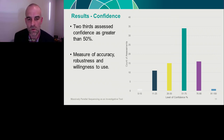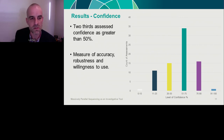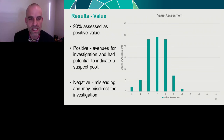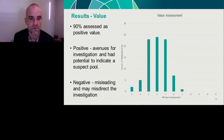For confidence results, two-thirds of the detectives assessed their confidence as greater than 50% — a measure of how accurate and robust they thought the intelligence was and their willingness to use it. I should note that none of these detectives had previous experience with MPS, so I would be concerned if they had very high confidence, given it is intelligence by its nature. For value, 90% of respondents assessed it as having positive value — they felt that the MPS provided avenues for investigation and had the potential to indicate a suspect pool.